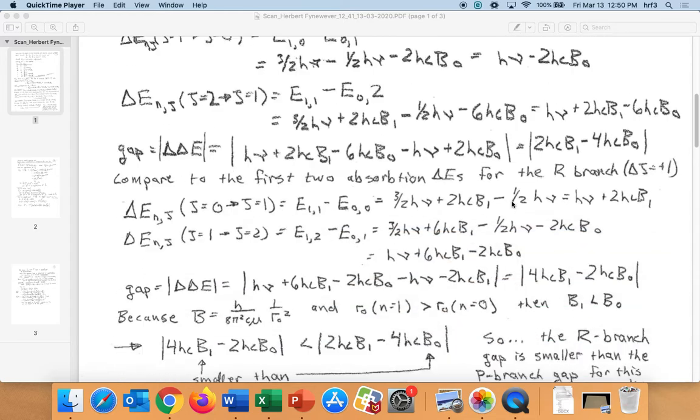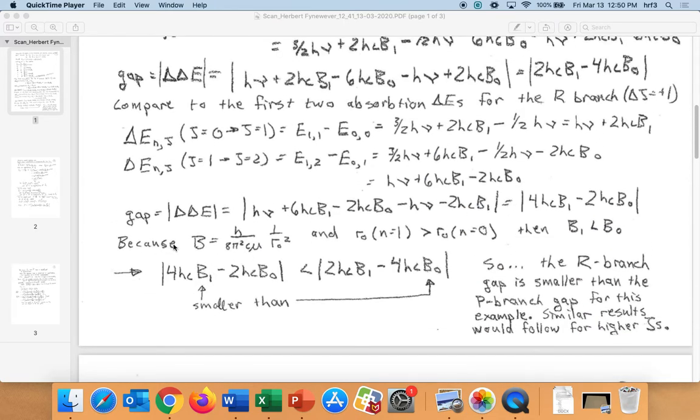So now let's think about what b is. We know b is h divided by 8π²cμ times 1 over r0 squared. But r0 is going to be longer for the vibrationally excited molecule than it is for the vibrationally relaxed molecule, because obviously when you're excited vibrationally, you have more stretching and more compressing. But because of anharmonicities, the stretching is going to be longer than the compressing is shorter. Because remember, our potential doesn't have the exact harmonic well. It sort of heads up towards an asymptote for stretching out.